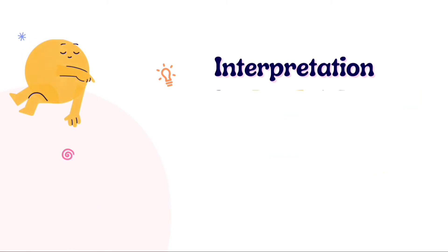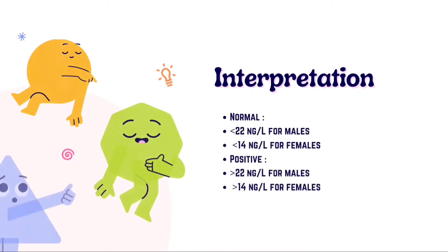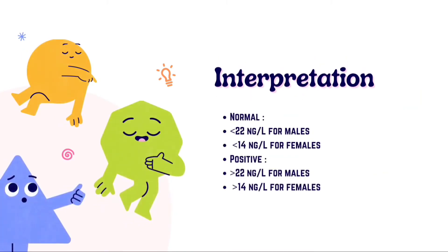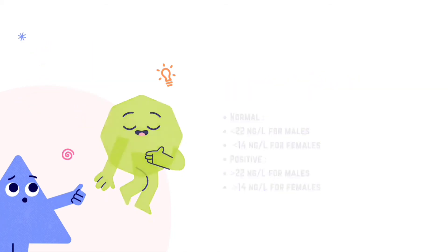Normal troponin T levels in blood are less than 22 nanograms per liter in males and less than 14 nanograms per liter in females. Elevated values are suggestive of cardiac injury or other diseases with cardiac issues.